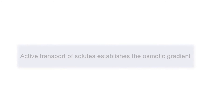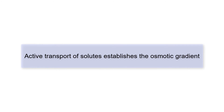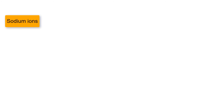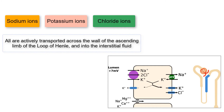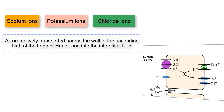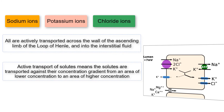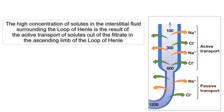Number 3. Active transport of solutes establishes the osmotic gradient. Sodium ions, potassium ions, and chloride ions are all actively transported across the wall of the ascending limb of the loop of Henle and into the interstitial fluid. This active transport of solutes means they are transported against their concentration gradient, from an area of lower concentration to an area of higher concentration. By doing this, the osmotic gradient that allows for water reabsorption is established. The high concentration of solutes in the interstitial fluid surrounding the loop of Henle is the result of this active transport out of the filtrate in the ascending limb.